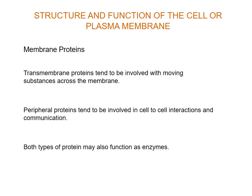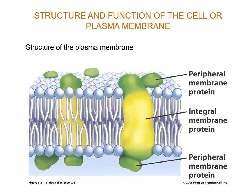Both transmembrane and peripheral proteins can function as enzymes. This is a classic diagrammatic version of a cell membrane — we have the phospholipids in blue with their tails facing each other, and both peripheral and transmembrane proteins shown. Remember that transmembrane proteins are also amphipathic. Consider whether peripheral membrane proteins are amphipathic — figure out the answer and write it into your notes.